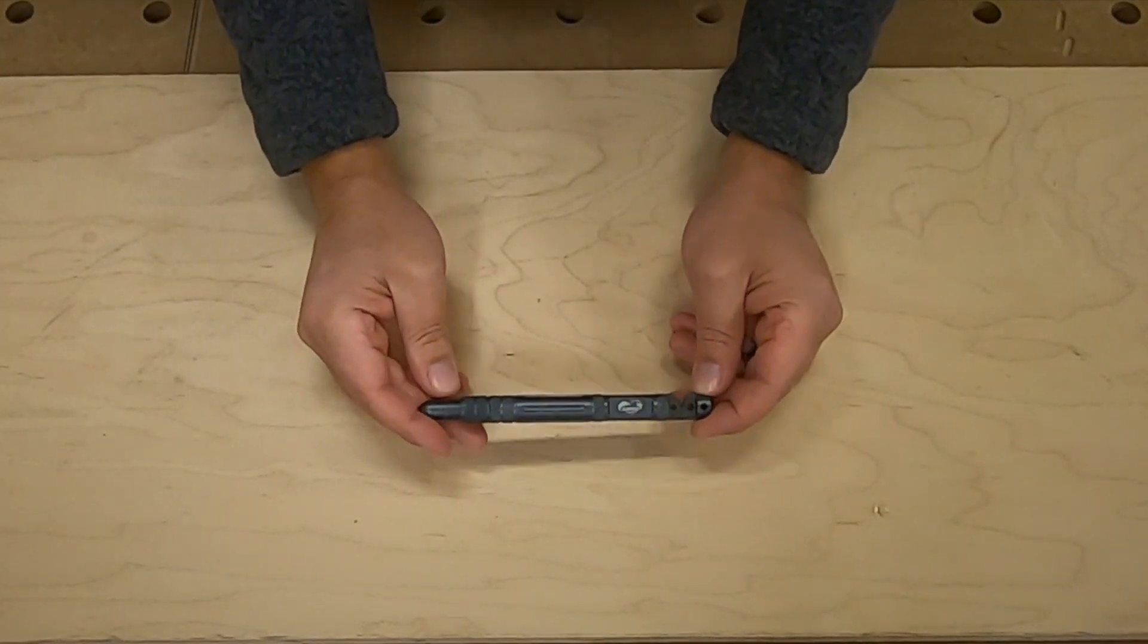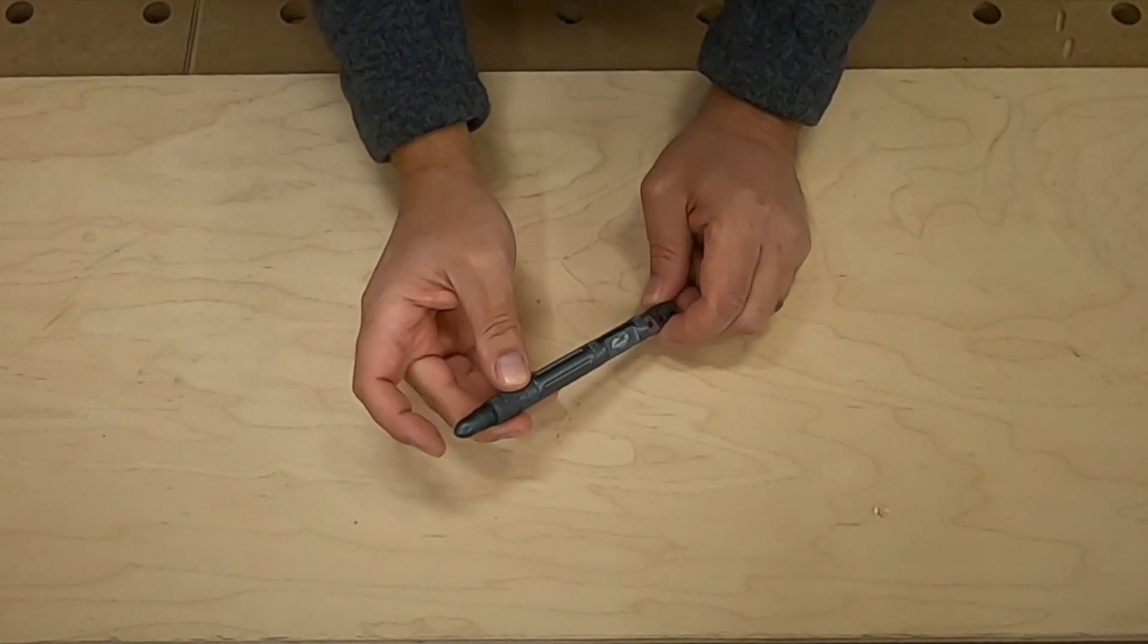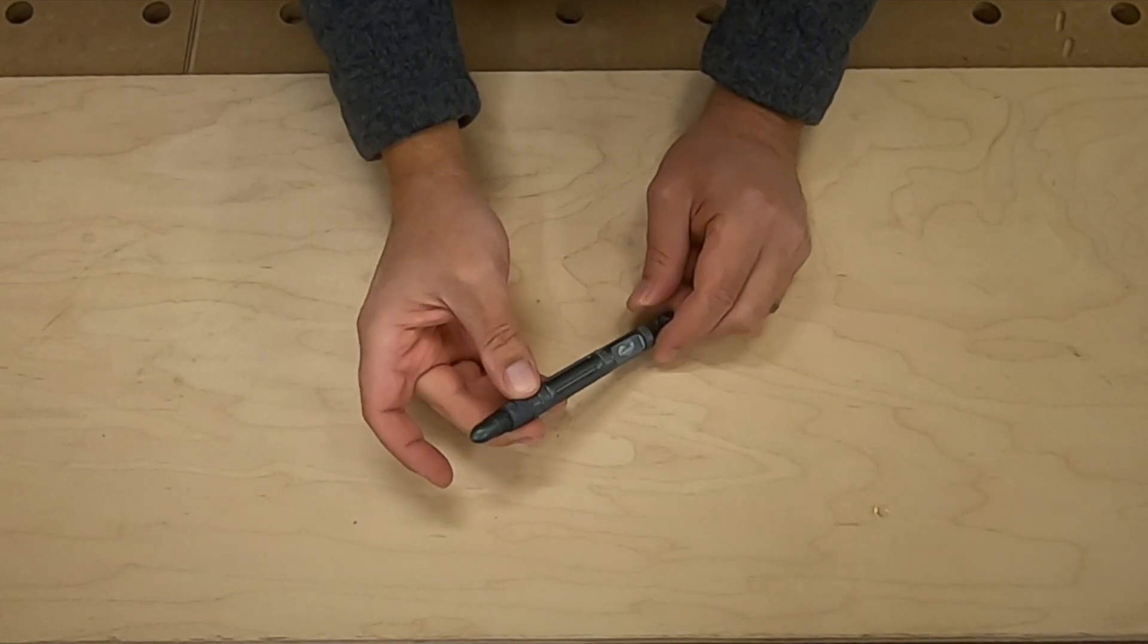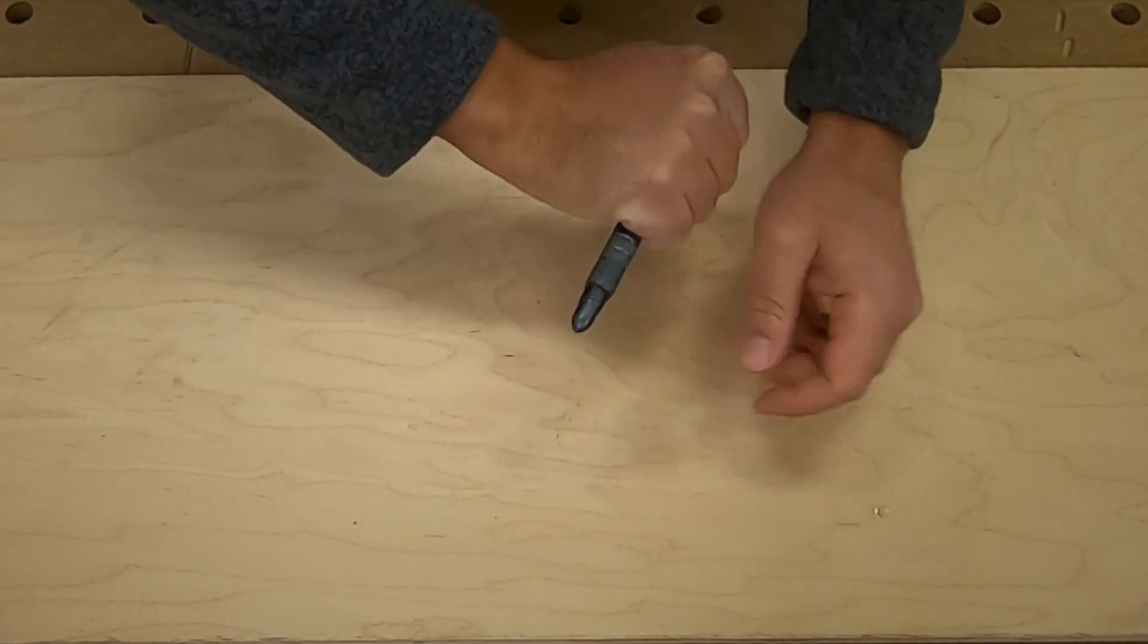It's a great little tool to have in your car, especially because it's got this glass punch on it. So if you need to break a window, you just smack it like that.